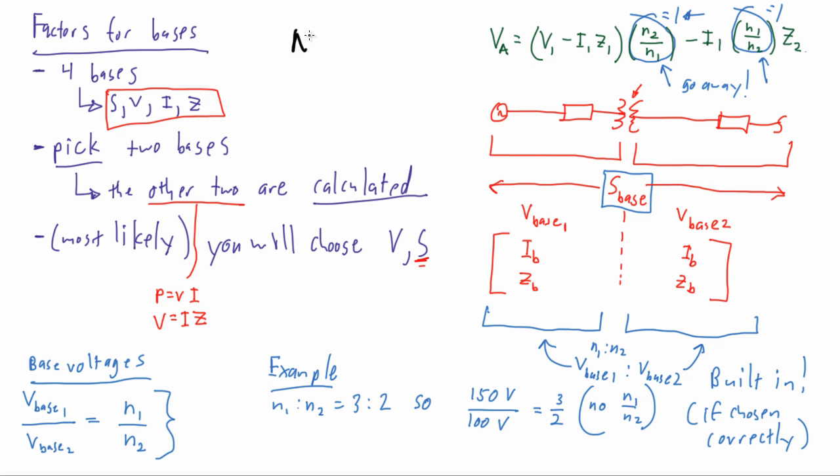In the next video, we're going to talk about the per-unit formulas associated with the bases. And we've seen in this video that the complication created by the transformer in making these N's in our formulas can be removed by the proper application of voltage base selection and its correspondence to that ratio relationship established in the transformer.